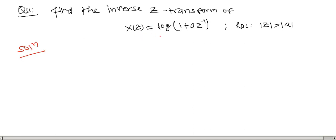Since X(z) is not in a rational form, at first glance I can see that if I differentiate this with respect to z, I can convert it into a rational form. So let us differentiate it.